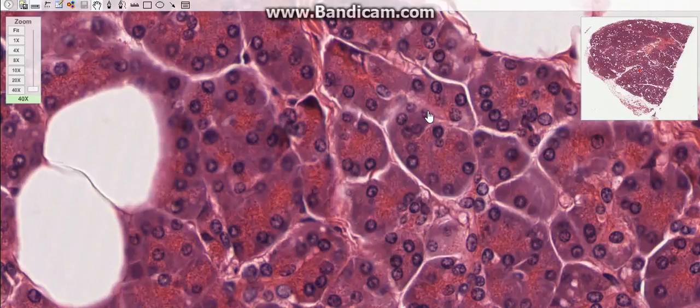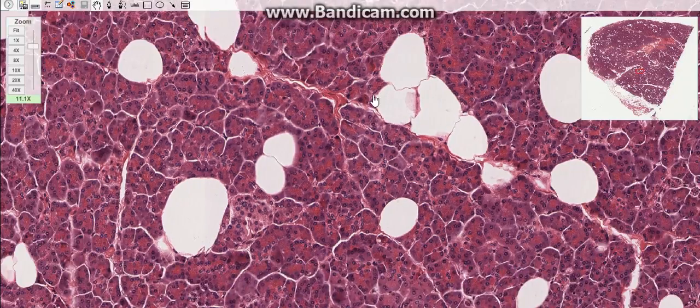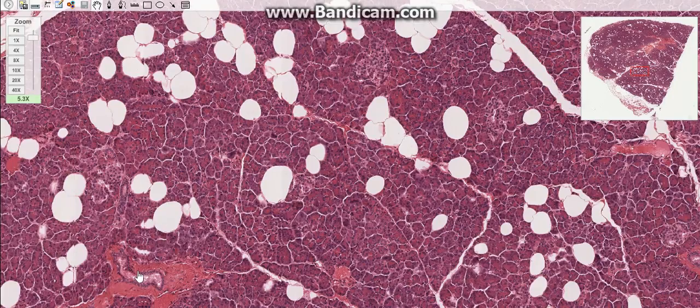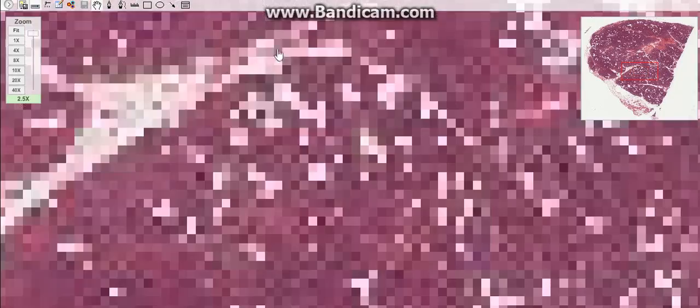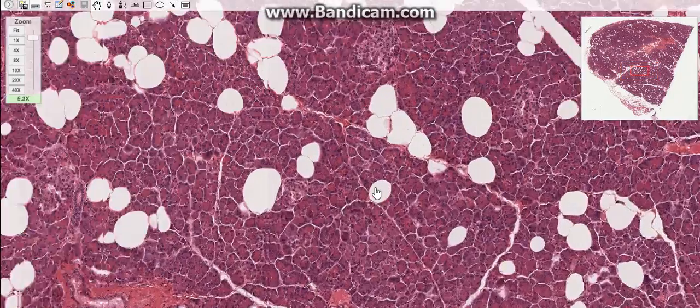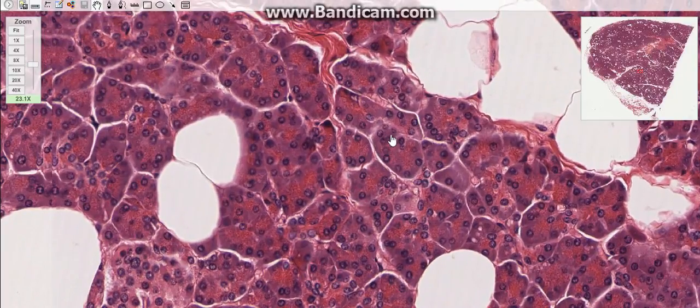The duct system consists of intercalated ducts, intralobular ducts, interlobular ducts, and the main pancreatic duct. The intercalated duct begins within the acinus and is lined by simple squamous epithelium.